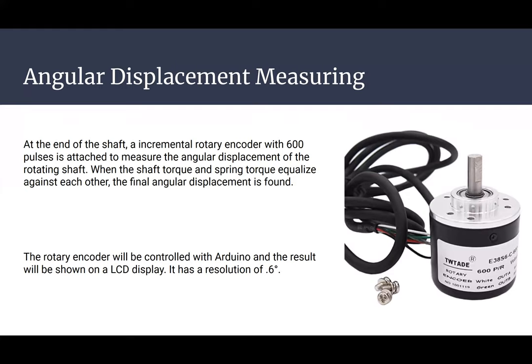In order to measure the angular displacement, at the end of the shaft, an incremental rotary encoder with 600 pulses is attached to measure how much it turns. When the shaft torque and spring torque equalize against each other, the final angular displacement is found. The rotary encoder will be controlled with Arduino, and the result will be shown on an LCD display. It has a resolution of 0.6 degrees.